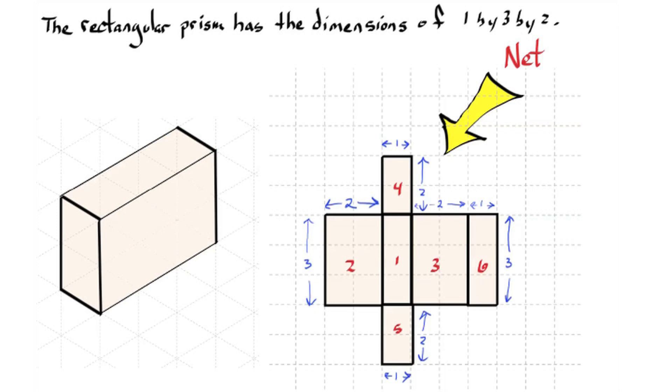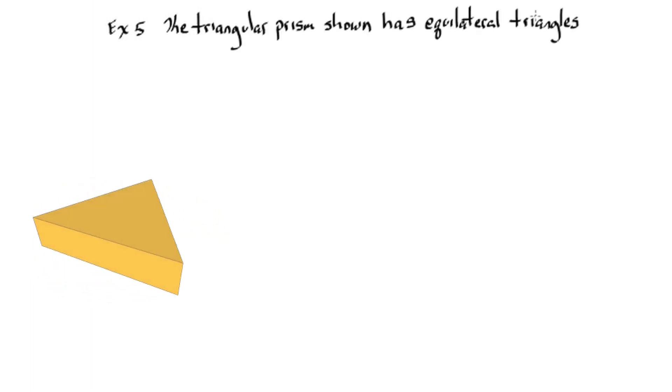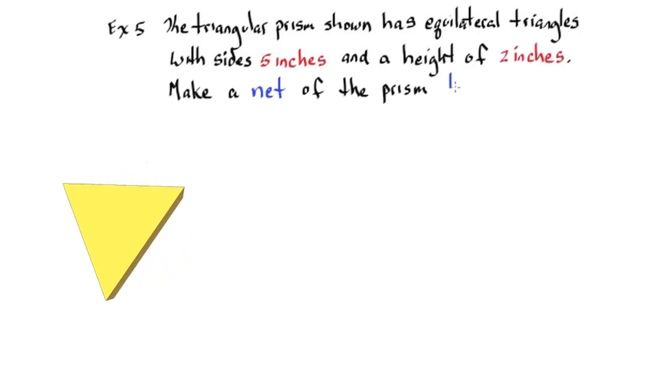Example five. The triangular prism shown has equilateral triangles with sides five inches and a height of two inches. Make a net of the prism labeling the dimensions. Pause.